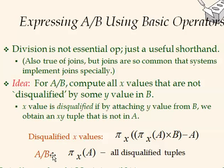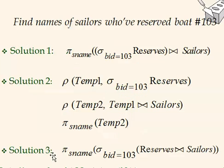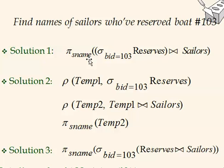Now let's review some exercises using all the relational algebra operators. The query is: find the sailors who have reserved boat number 103. We use two tables: sailors and reserves. Solution one is intuitive — we select from reserves where bid = 103, join with sailors, and project over the name attribute.